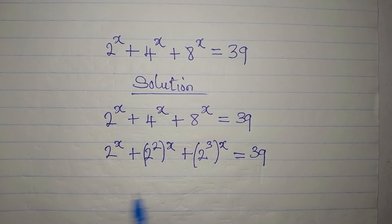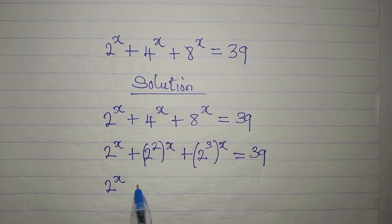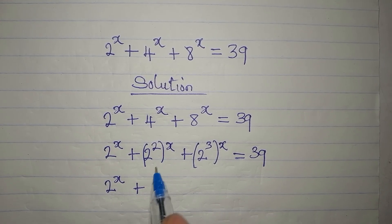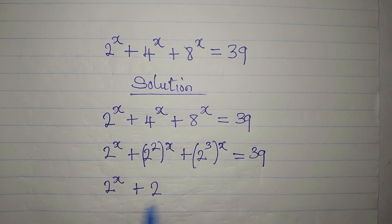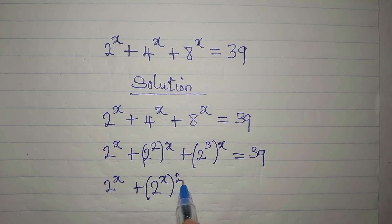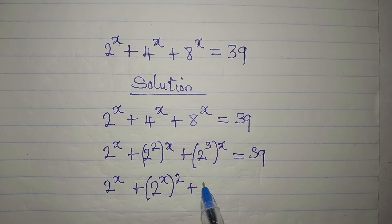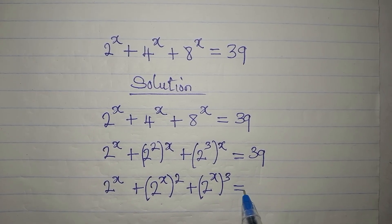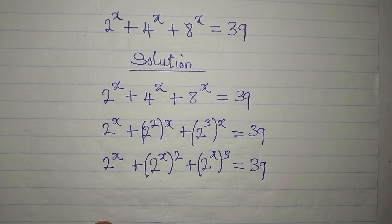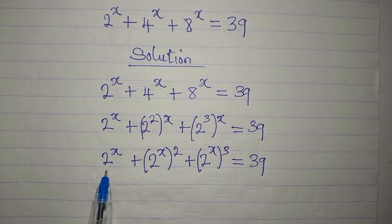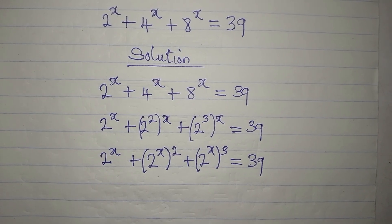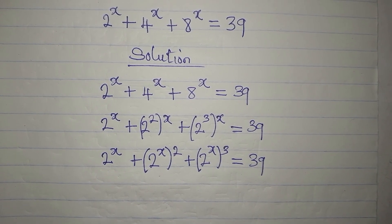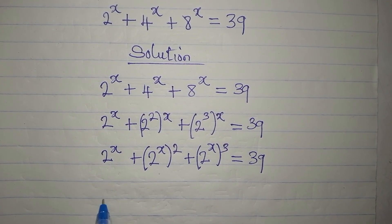Now let us rearrange. I don't want to open the bracket; I would rather change the position of the powers. So we have 2 to the power of x, then 2 to the power of x all to the power of 2, then plus 2 to the power of x all to the power of 3, and this equals 39. The reason I did this is to have 2 to the power of x in all three terms, so we can use a single letter to represent it.